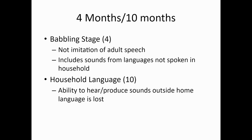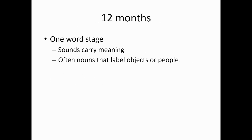By 10 months, we hit the household language stage, which is being able to hear and produce sounds from the native tongue or the tongue within the household. But sounds made outside the home language at this point are lost. At 12 months, you hit the one word stage. This is where an infant's brain has begun to connect the meaning of a word with its sounds. Often these are nouns that label objects or people, like dog, mommy, daddy.